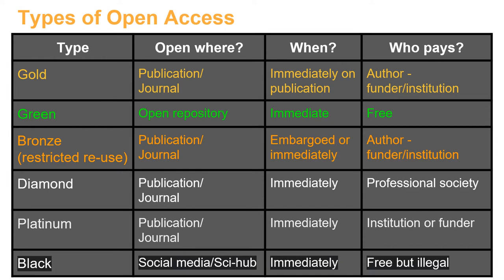These are often talked about as referring to journal articles, but actually apply to how we go about making all research outputs accessible. Gold open access is when you, as the author, pay a fee to make your article or other research outputs open immediately and free to read, and if possible available for reuse. Green open access is where you use a preprint server or open repository to deposit a version of your article or other research outputs. This does not come at a charge to you or to the reader.